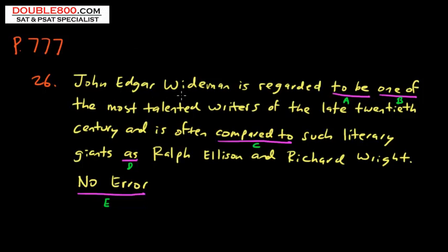John Edgar Weidman is regarded to be one of the most talented writers of the late 20th century and is often compared to such literary giants as Ralph Ellison and Richard Wright. We have to identify the error — find the mistake.